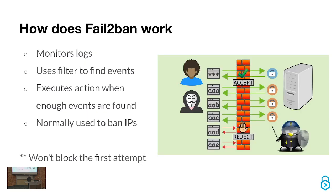Normally how Fail2Ban bans IPs is it uses iptables, which is the firewall for Linux. It will add a rule that drops traffic from that IP address to whatever port the service is on by default. Or you could set it to drop any traffic from that IP address.